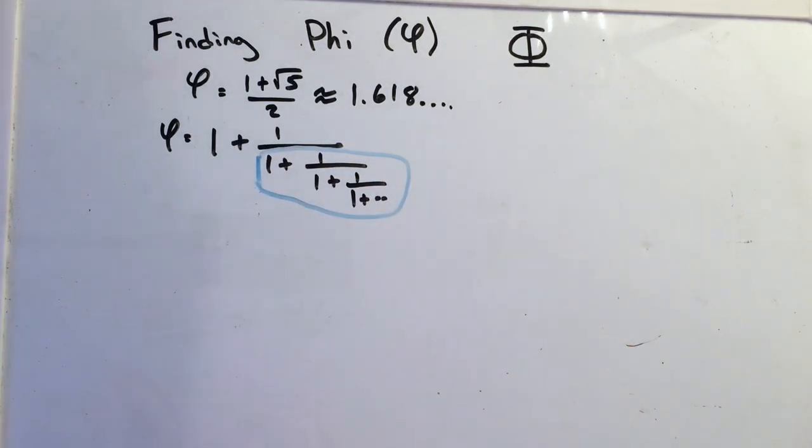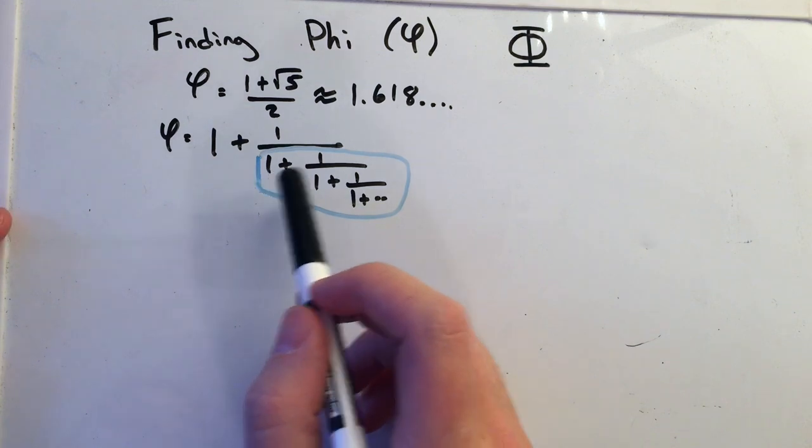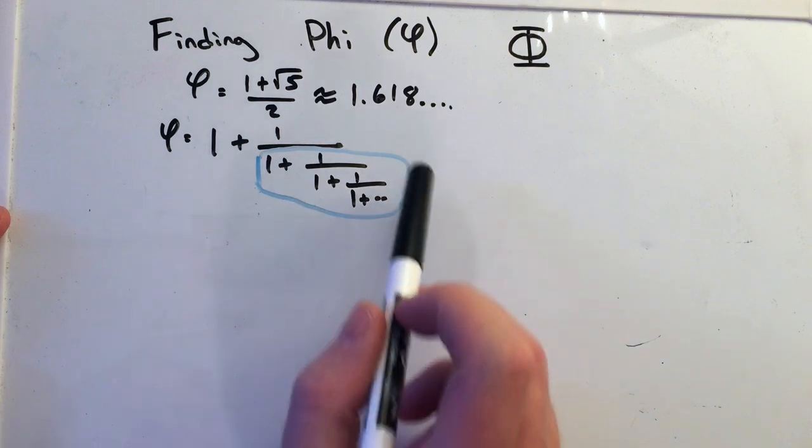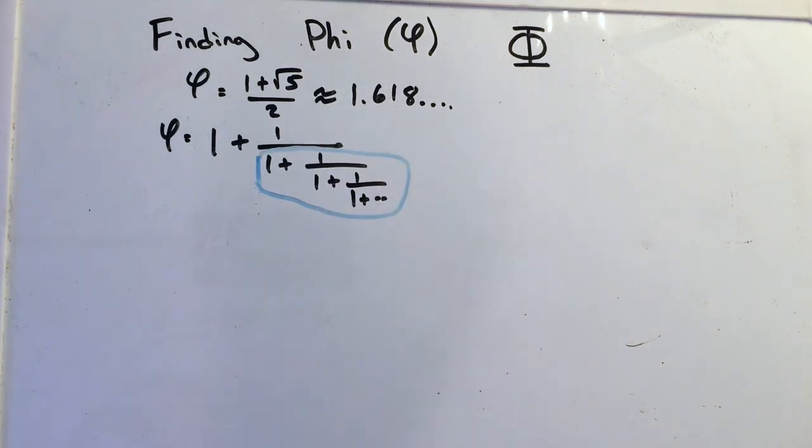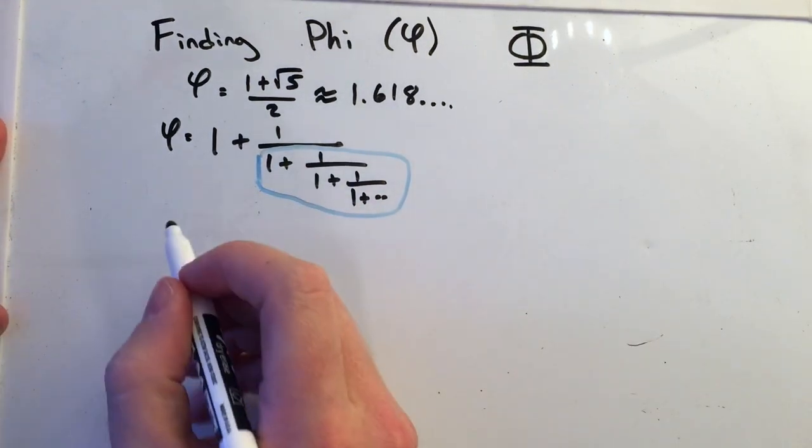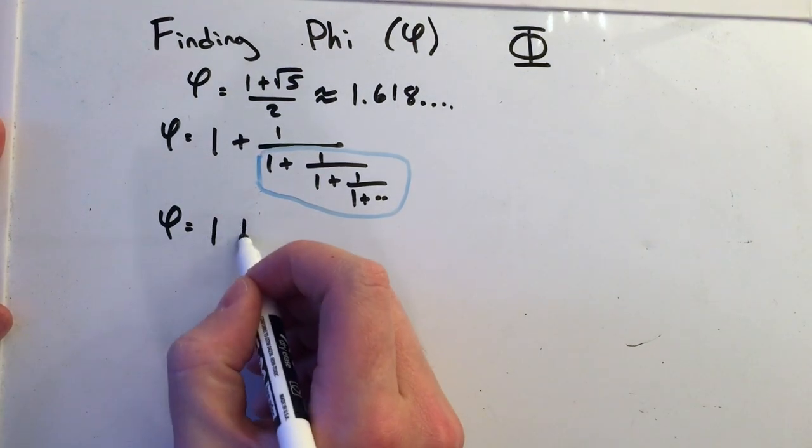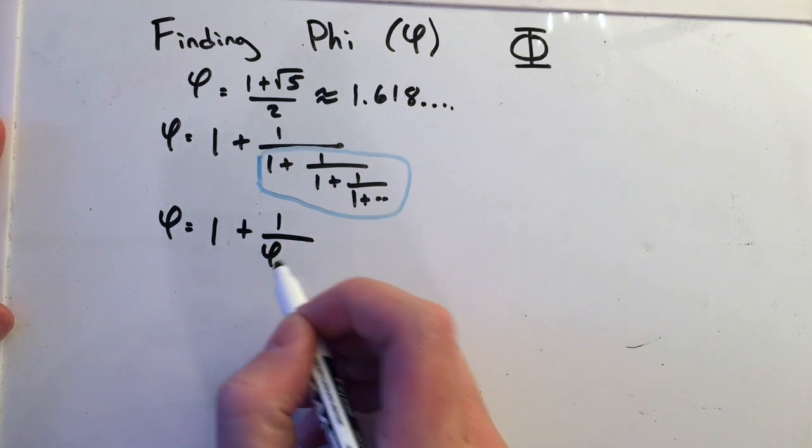That part is phi itself. We can see it's one plus one over one plus one over, which is this part. One plus one over. In this little blue section, we have phi itself. So I can rewrite this continued fraction really as just phi is equal to one plus one over phi.